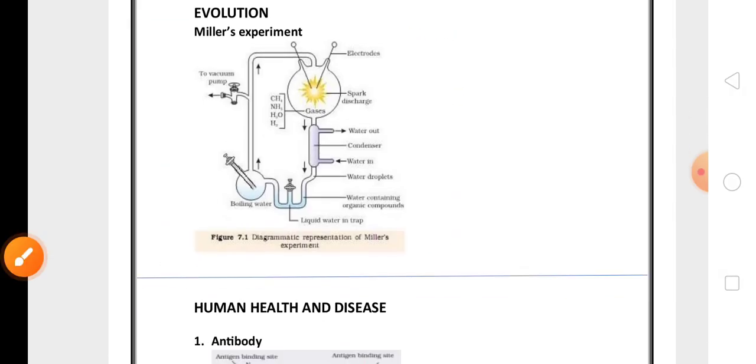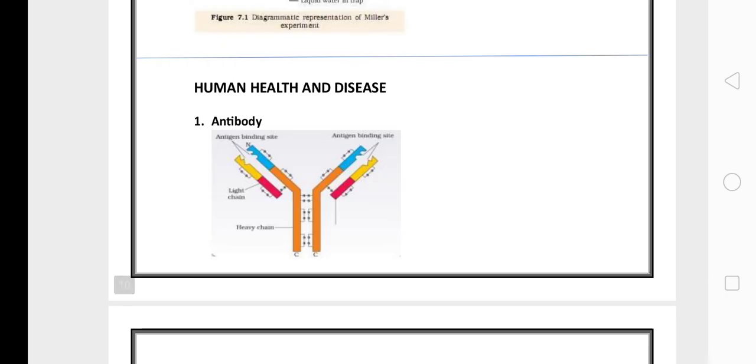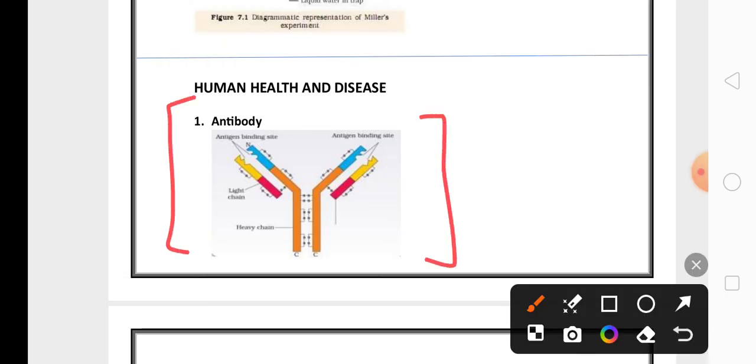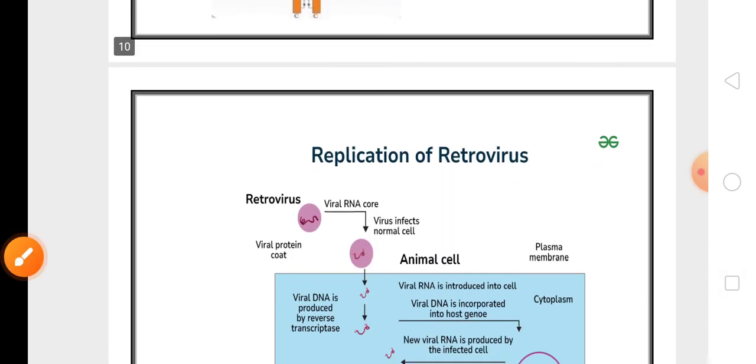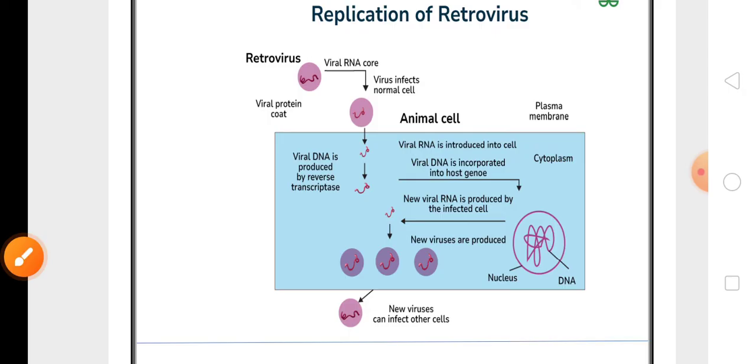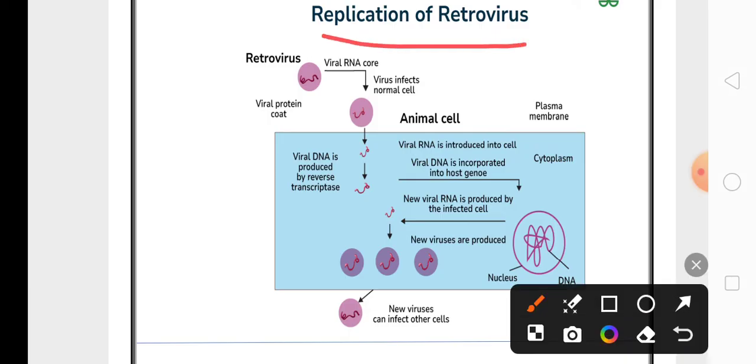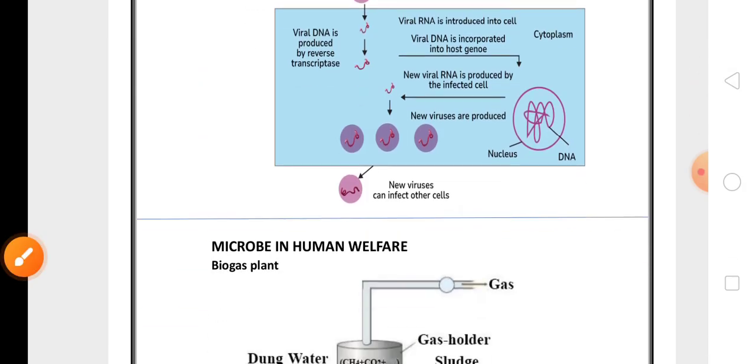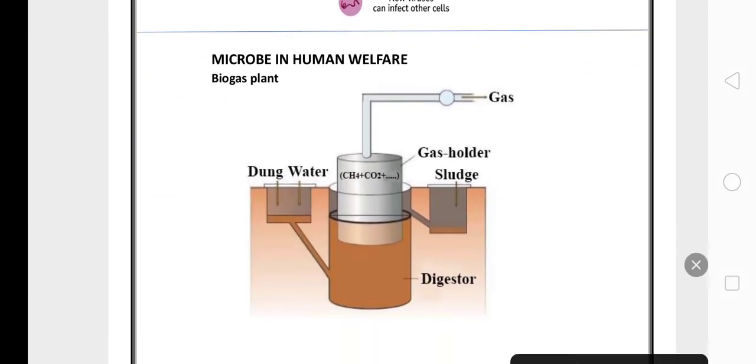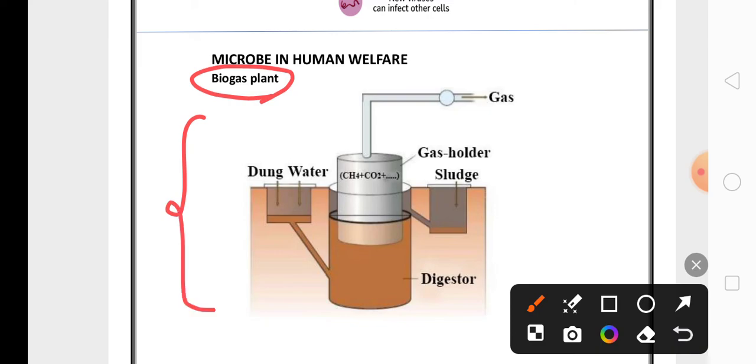Then from human health and disease, either the diagram of antibody is very very important for three marks, or for five marks the life cycle or replication of retrovirus or life cycle of HIV is very important for five marks. Then from microbes in human welfare, biogas plant diagram is highly important.